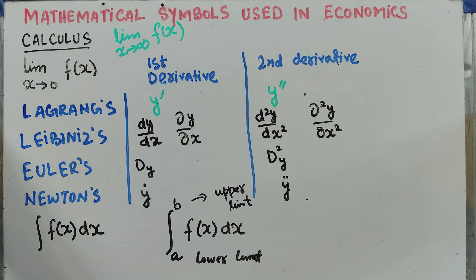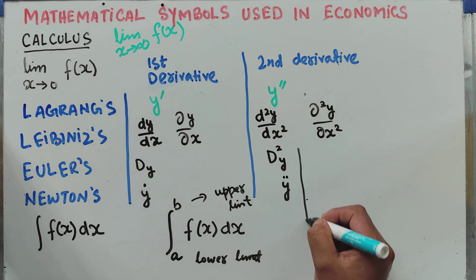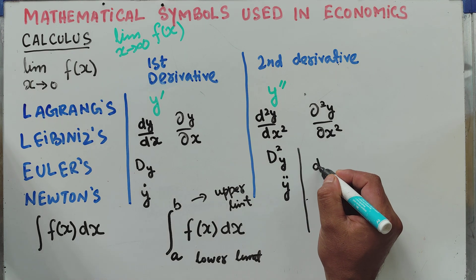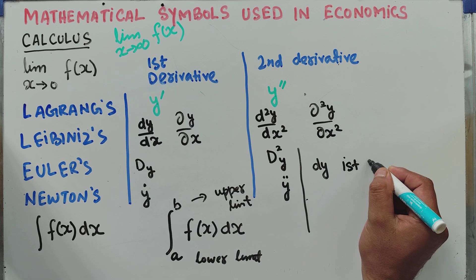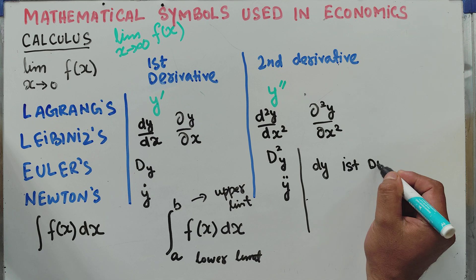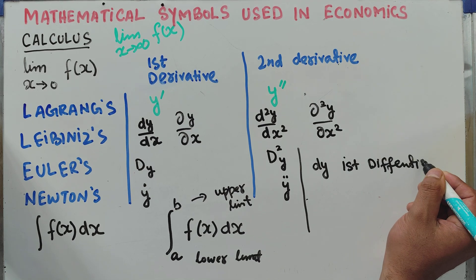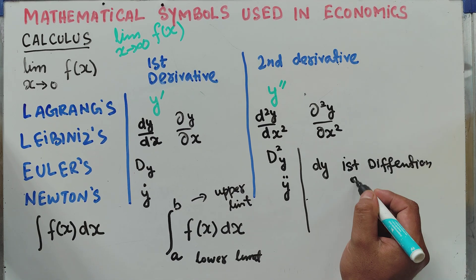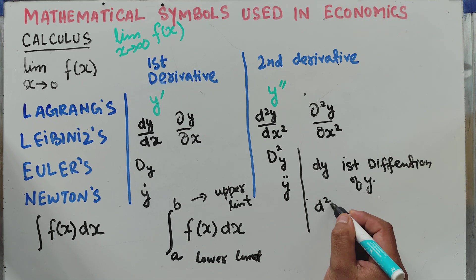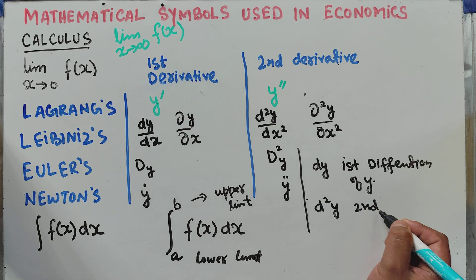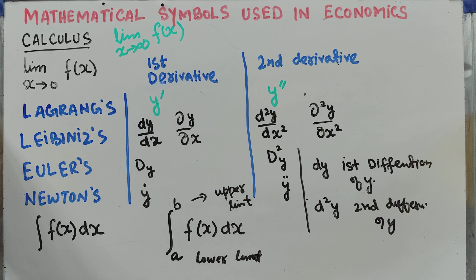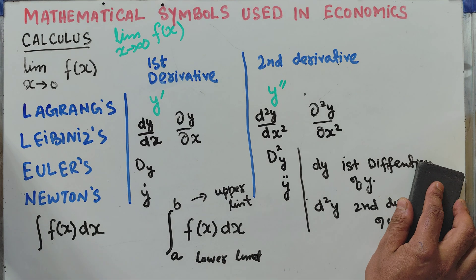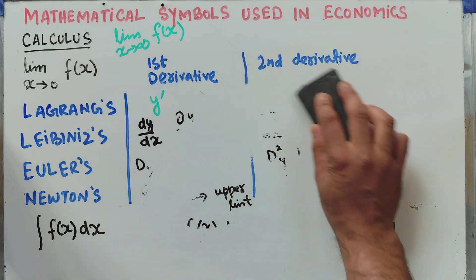Then we have other notations: del y, which we call the first differential of y. We also have d squared y, which we call the second differential of y. There are other notations in calculus but we will cover only these.